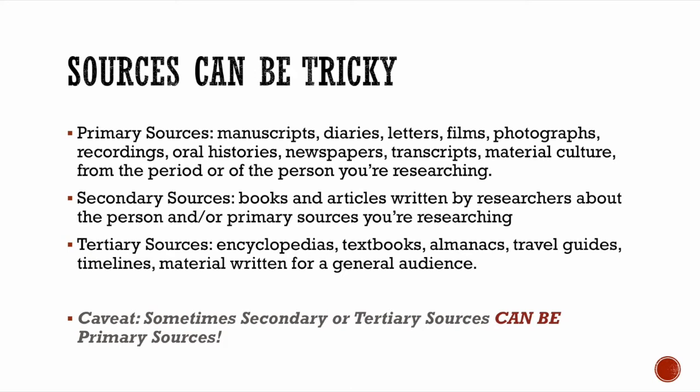Now that's very different from a secondary source. Secondary sources are those books and articles written by researchers, like historians, about the time. So most of the books you're going to read that are history books are secondary sources, except for your textbook. Your textbook, encyclopedias, and other things fall into what's called tertiary sources. They're written for a general audience and not generally cited — they just contain basic information available to everyone. But you have to be careful, because sometimes secondary or tertiary sources can be primary sources. For example, if you're doing a history on encyclopedias or a history of textbooks, then they in fact become the primary source, because your history is being written about them — you're going to them for the information you're writing about.